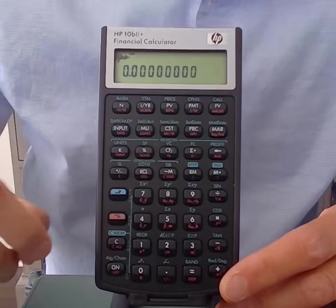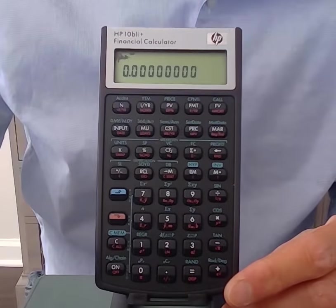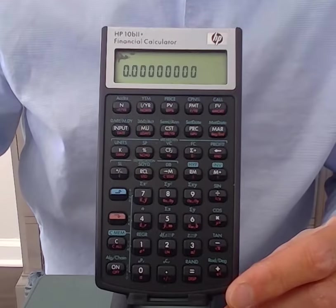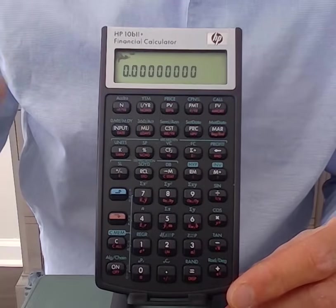And you see that it flashed 12P slash YR. We do not want 12 periods per year. We want to set it to one period per year.